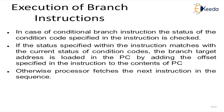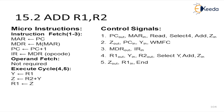In the case of a conditional branch instruction, the status of the condition code specified in the instruction is checked. If the status specified within the instruction matches the current status of the condition code, the branch target address is loaded into the PC by adding the offset that has been specified in that instruction. Otherwise, the processor fetches the next instruction. When performing the branch instruction with respect to the offset, it should contain the status specified within the instruction; if it matches the current status of the condition code, the branch target address is loaded into the PC by adding the offset.